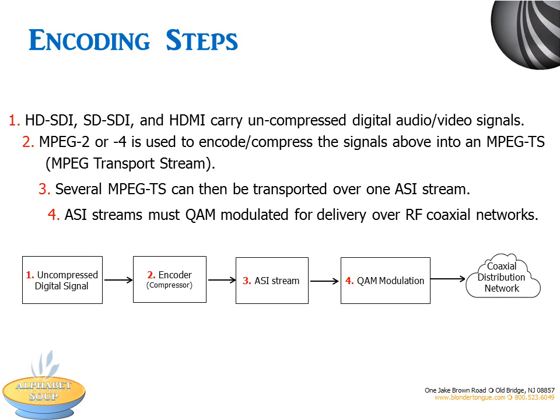This diagram shows the steps to encode video and where the interfaces we've talked about fit into the system. First, the SDI or HDMI sources carry uncompressed signals, and then they're encoded into MPEG-2 or MPEG-4 transport streams. Multiple transport streams can be packaged into one ASI stream. Finally, the ASI is then modulated for delivery over coax. There are two other resources available that can help here — one is on video encoding, and the other is on transport streams.